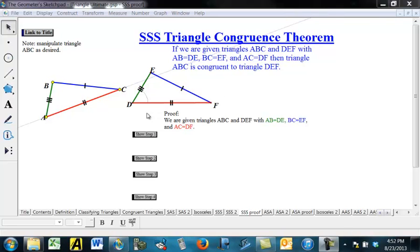says if we're given triangles ABC and DEF with AB equal to DE, BC equal to EF, and AC equal to DF, then triangle ABC is congruent to triangle DEF.